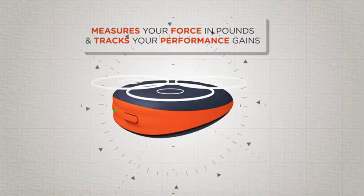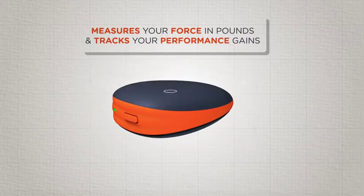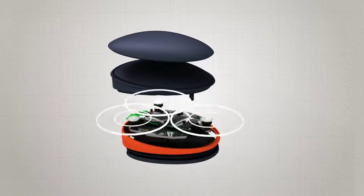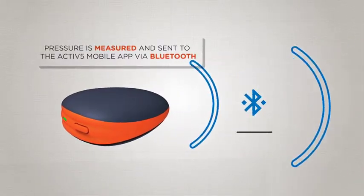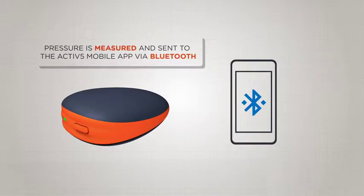Active 5 measures your force in pounds and tracks your performance gains, using proprietary technology developed over 5 years with millions of dollars. Active 5 measures your applied pressure and sends it to the Active 5 mobile app via Bluetooth.